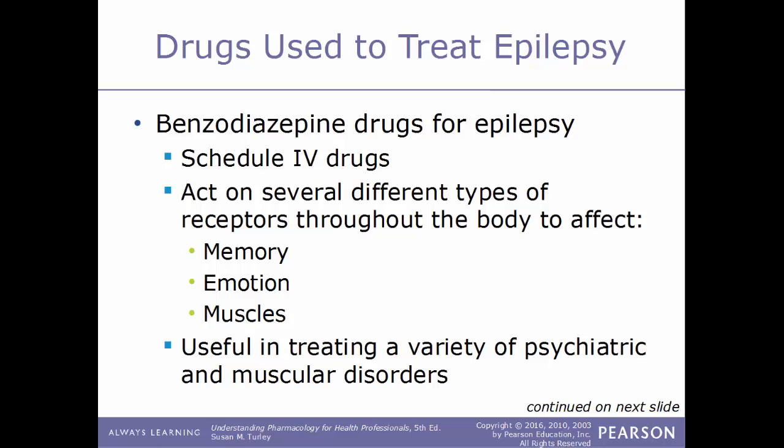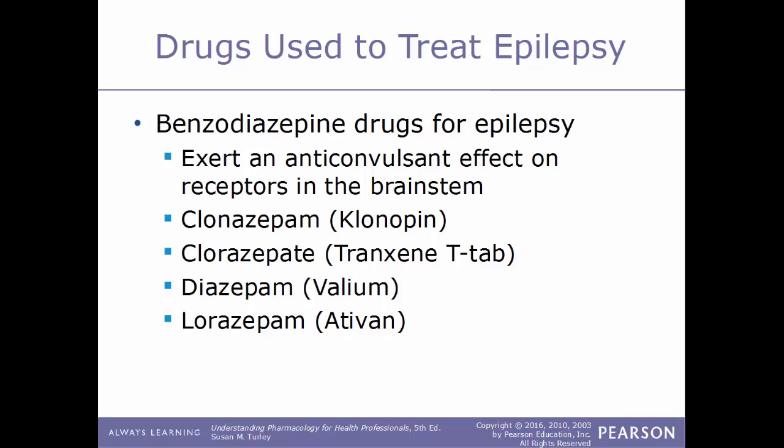Another category are the benzodiazepines, which are Schedule IV drugs. These act on several different types of receptors throughout the body, affecting memory, emotion, and muscles, and are useful in treating a variety of psychiatric and muscular disorders. They exert an anticonvulsant effect on receptors within the brainstem. Examples include clonazepam (Klonopin), clorazepate (Tranxene T-Tab), diazepam (Valium), and lorazepam (Ativan).